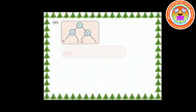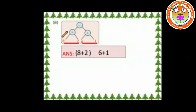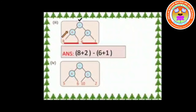In this also we want to start from the branches. The symbol plus has leaves 8 and 2 — this is on the left side. On the right side, the leaves are 6 and 1. The symbol of the node is minus. Thus we can write it as 8 + 2 − (6 + 1).